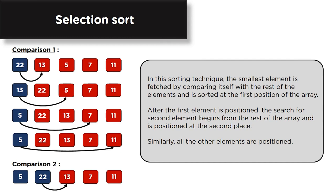In selection sort, the smallest element is fetched by comparing itself with the rest of the elements and is placed at the first position of the array. Once the first element is sorted, the search for the second minimum element begins from the rest of the array and is positioned at the second place. Similarly, one by one all the elements are positioned.